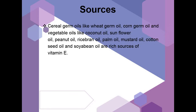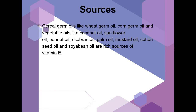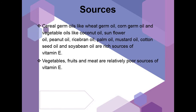The sources of vitamin E include cereal germ oils like wheat germ oil and corn germ oil, and vegetable oils like coconut oil, sunflower oil, peanut oil, rice bran oil, palm oil, mustard oil, cottonseed oil, and soybean oil, which are rich sources. Vegetables, fruits, and meat are relatively poor sources of vitamin E.